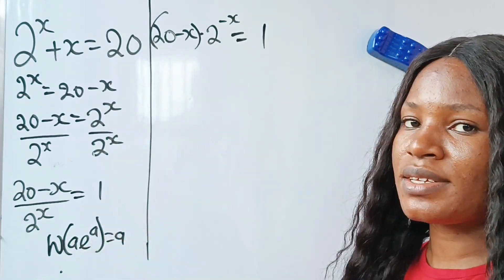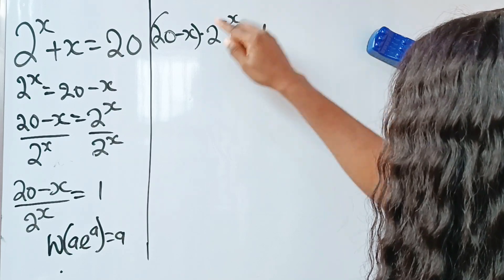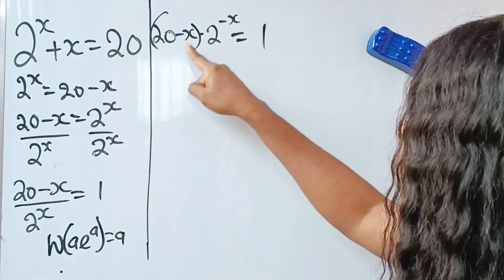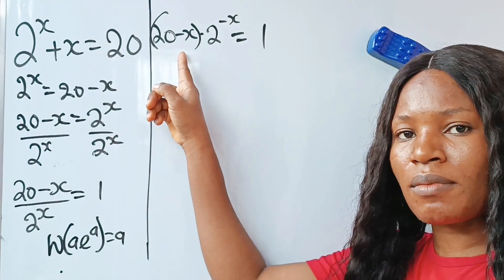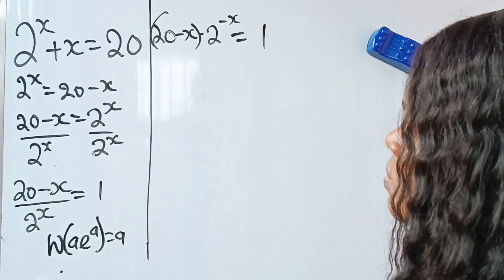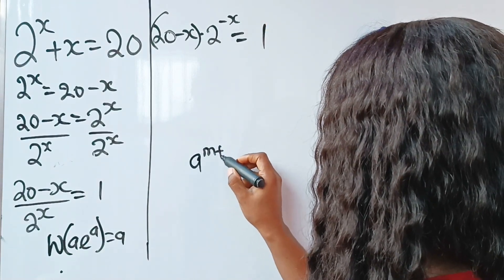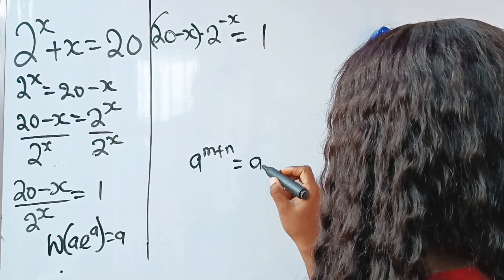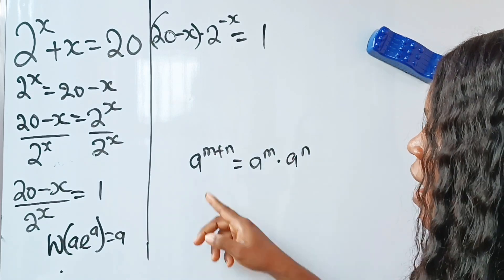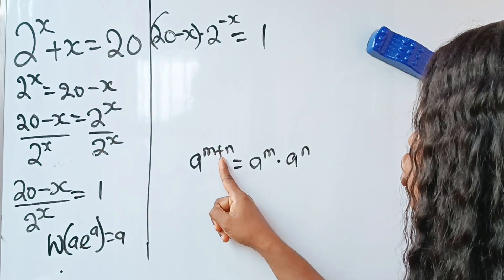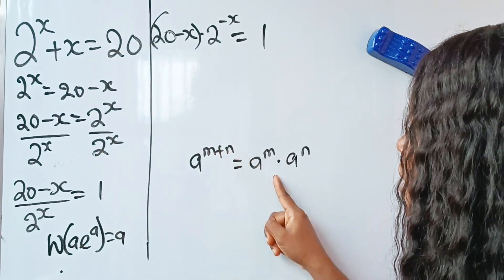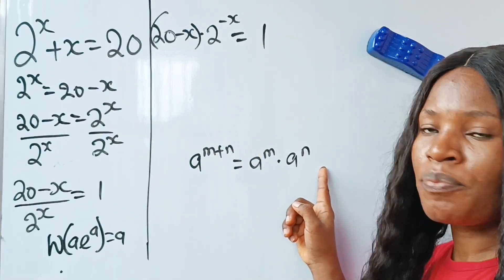Recall we need e and whatever we have here must be the same. We can get the same power if we add 20 to the exponent, so that this power and the coefficient become the same. Now we are left with how to introduce e. Note that a to the power of m plus n is the same as a to the power of m multiplied by a to the power of n. So if I want to introduce plus 20 in the exponent, I multiply by 2 to the power of 20.